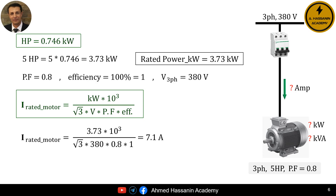Since the efficiency of the motor is unavailable, we can assume it to be 100% or 1. The motor is three-phase with a three-phase voltage of 380 V and a power factor of 0.8. The rated current equals the rated power in kilowatts multiplied by 1,000, divided by the square root of 3, multiplied by the rated voltage in volts, the power factor, and the efficiency. Applying the equation: rated current equals 3.73 multiplied by 1,000, divided by the square root of 3 multiplied by 380 multiplied by 0.8 multiplied by 1. This results in a rated current of approximately 7.1 amperes for the 5 horsepower motor.